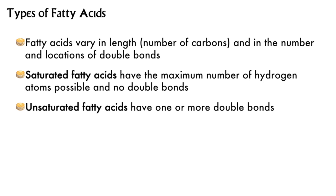Fats vary in the fatty acids that make them up. The glycerol doesn't change, but there are a couple of important variables that affect the composition of fatty acids. One is the length of the hydrocarbon chain, and the other is the presence and location of double bonds. Remember how double bonds have a very special type of isomerization? We did a little dance about this — cis-trans isomers — and yes, that is important.